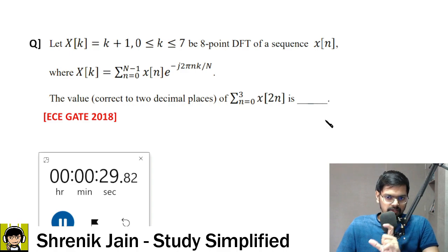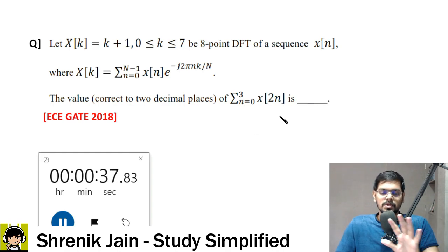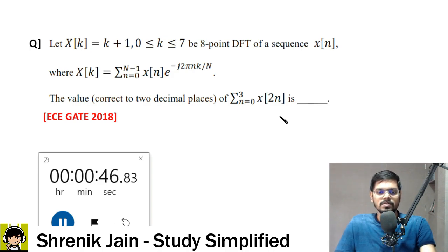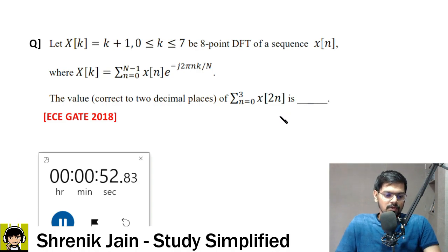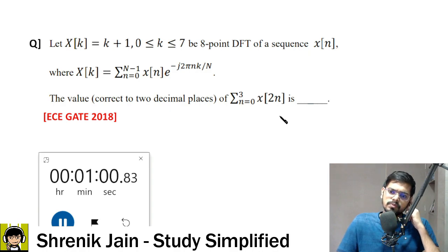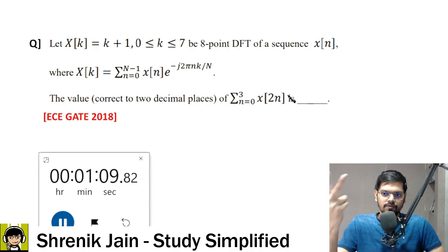This question is a little bit interesting because the DFT signal is given but the time domain signal is not given, and what they are asking is about the time domain signal only. The concept to use: DFT is given, time domain signal is asked — so IDFT concept. The 4 terms you need are x(0), x(2), x(4), and x(6).